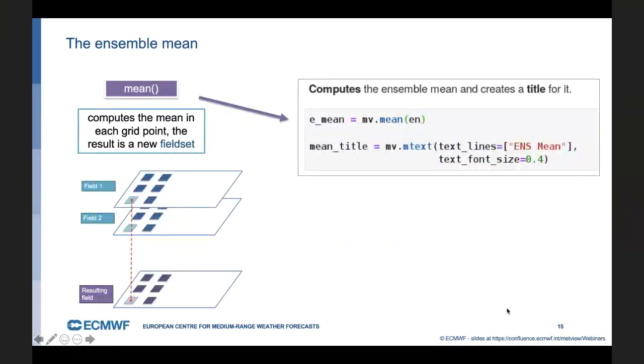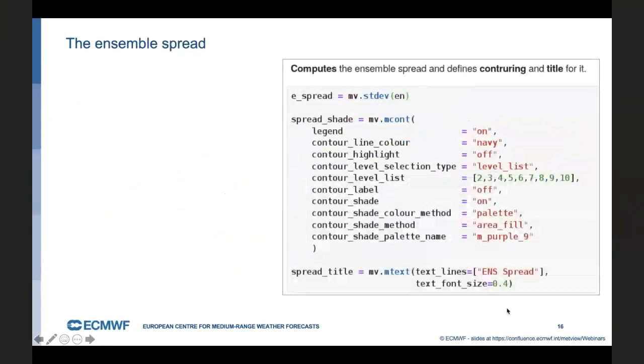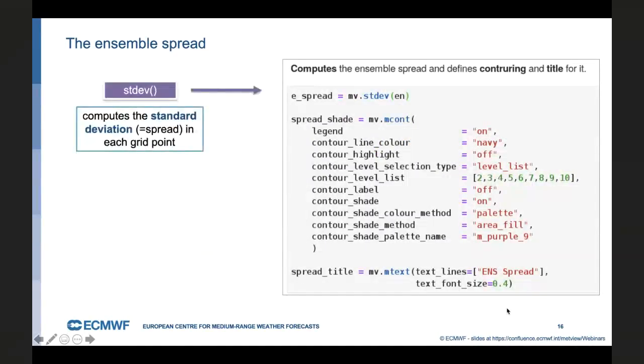The last map we need to create is the ensemble spread, which is by definition the standard deviation of the ensemble members. We can compute it with the stdev function. And because the spread is a different kind of quantity than the original field, we need to create a new isoline shading that's adjusted to the current value range. And in the end, we define a title again for the spread.